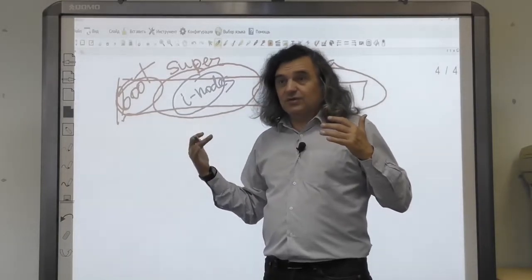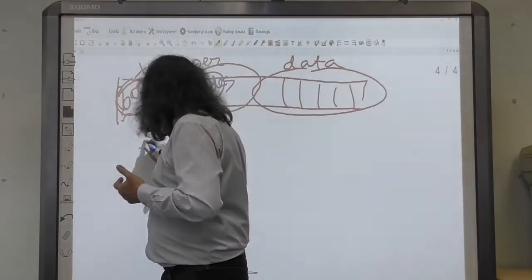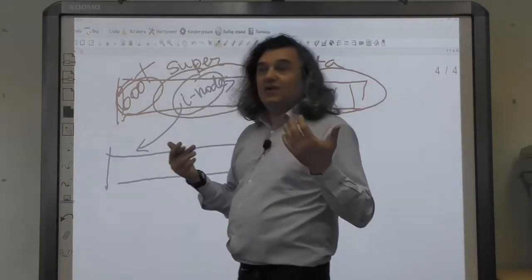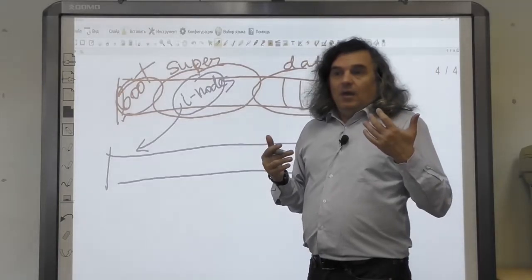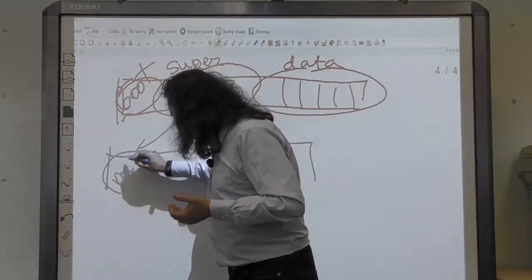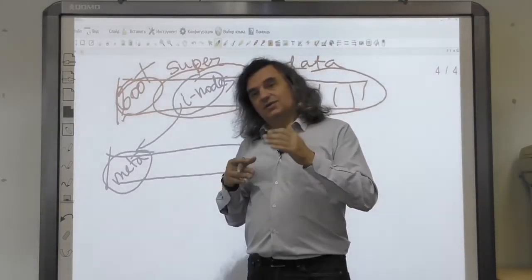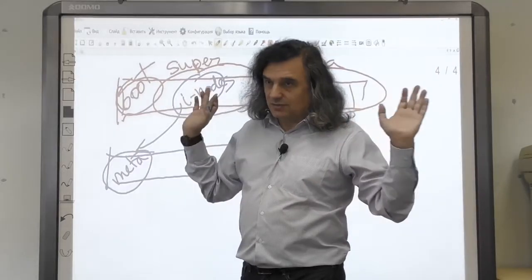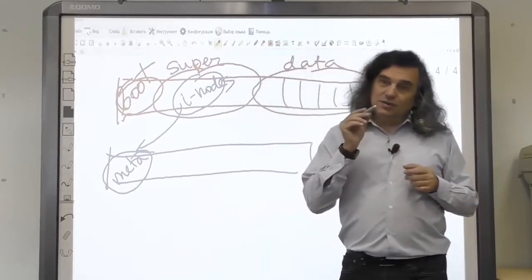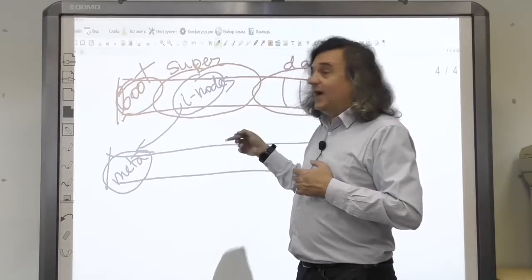Each inode, or index node, describes a separate file. It includes metadata related to the file, such as ownership, access mode (read, write, execute), file type and size. But the inode also includes a list of physical blocks holding the file content.